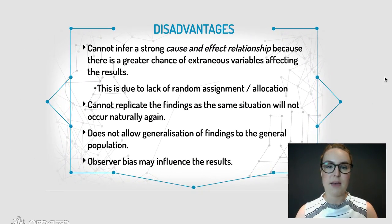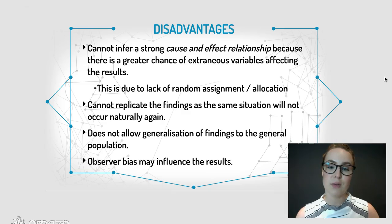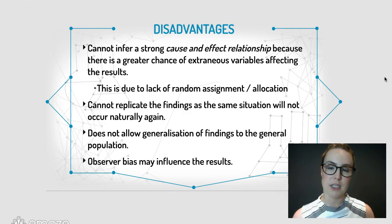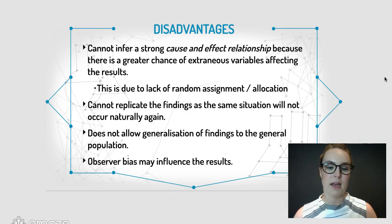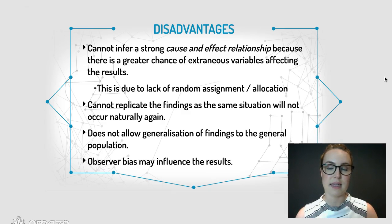The disadvantages: because you aren't randomly assigning people to groups, you can't really infer a strong cause-and-effect relationship, as there is a strong chance that other variables have gotten in the way. You also can't replicate the findings, as the same situation can't naturally occur again — remembering that you haven't been able to control all the extraneous variables. It doesn't allow for generalisation to the general population, as you can only apply it to the sample that were in that setting at the time. Another disadvantage is that observer bias may influence the results, since the researcher has to observe, record, or measure something, introducing some degree of interpretation.